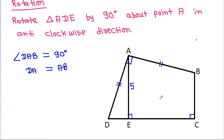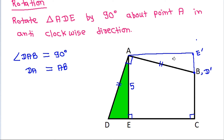So, point D will come at point B. Suppose D prime. And DE is horizontal, so D prime E prime will be vertical, and these two areas will be equal. And this angle will be equal to this angle, and angle DAB is equal to 90 degrees.